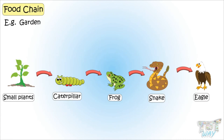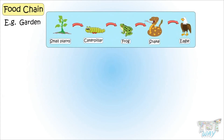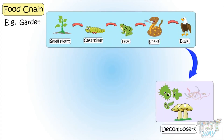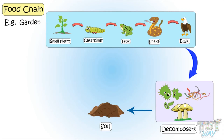When the eagle, snake, frog, and caterpillar all die, microorganisms like bacteria and fungi decompose the dead animal waste into nutrients that become part of the soil. And those nutrients are again used by plants to grow and make food.